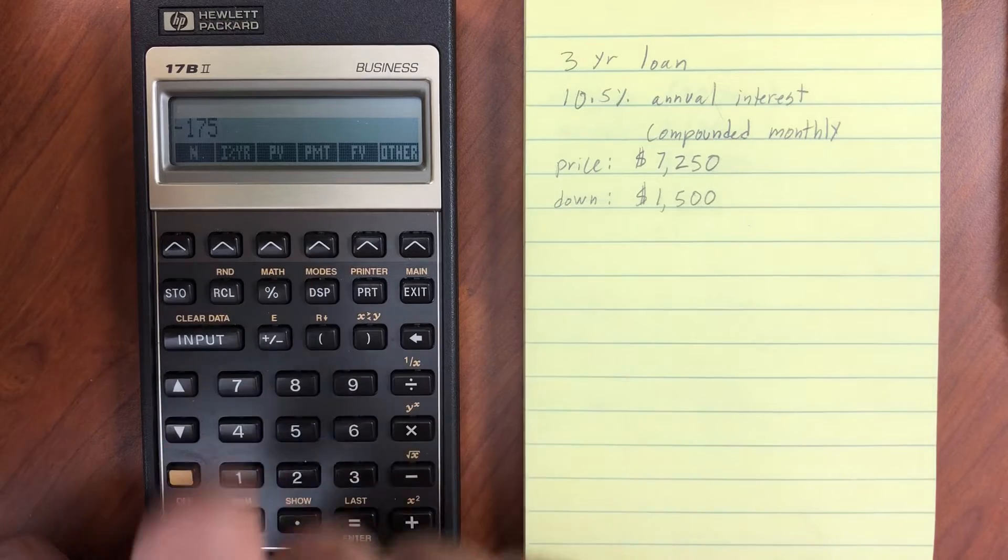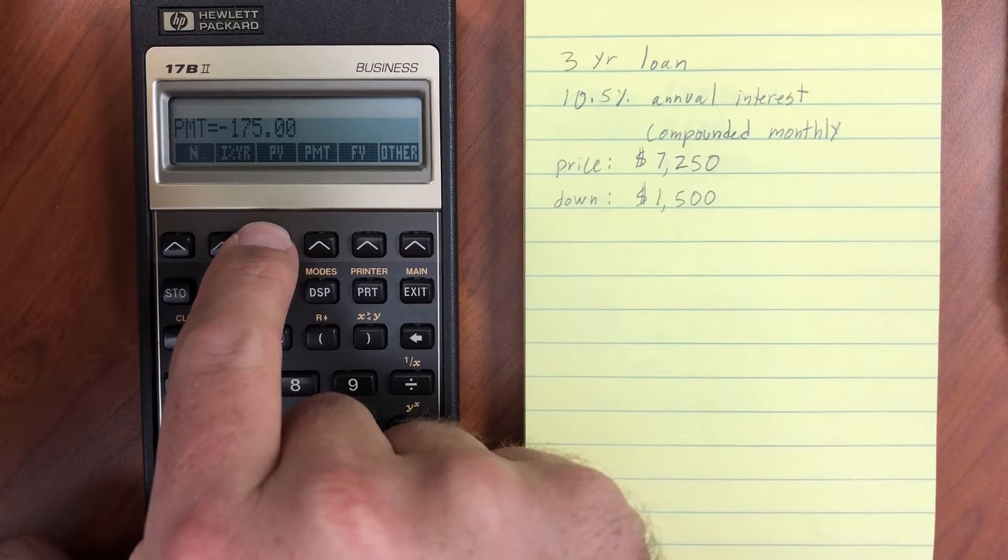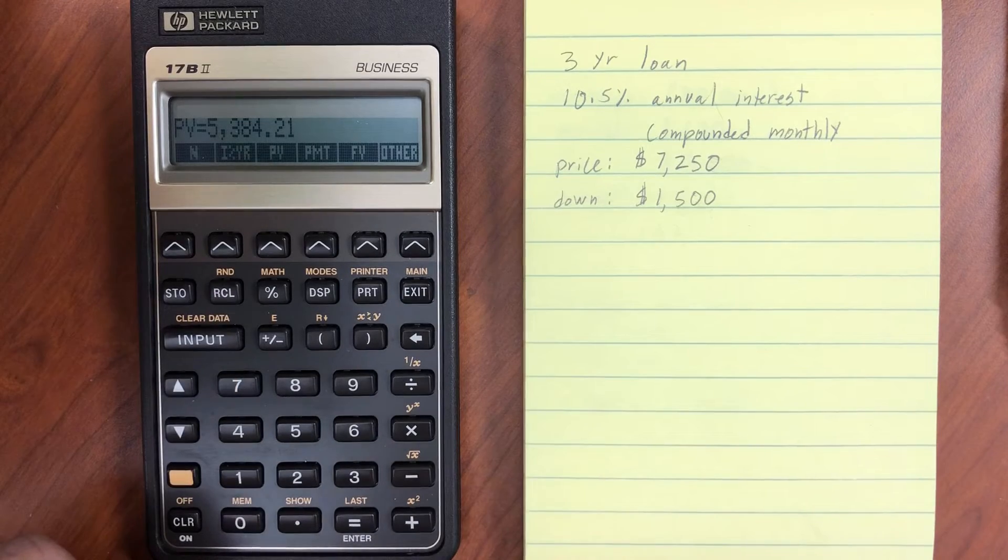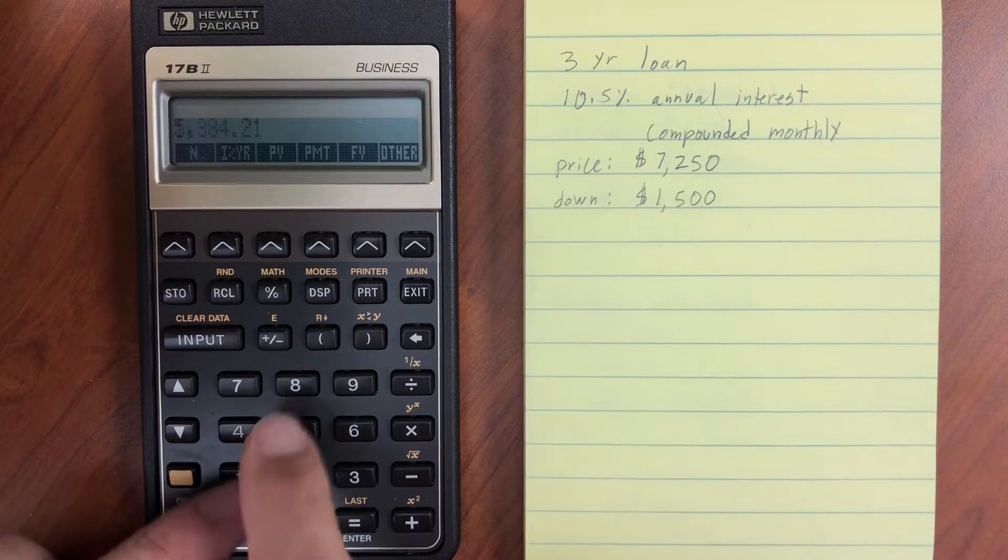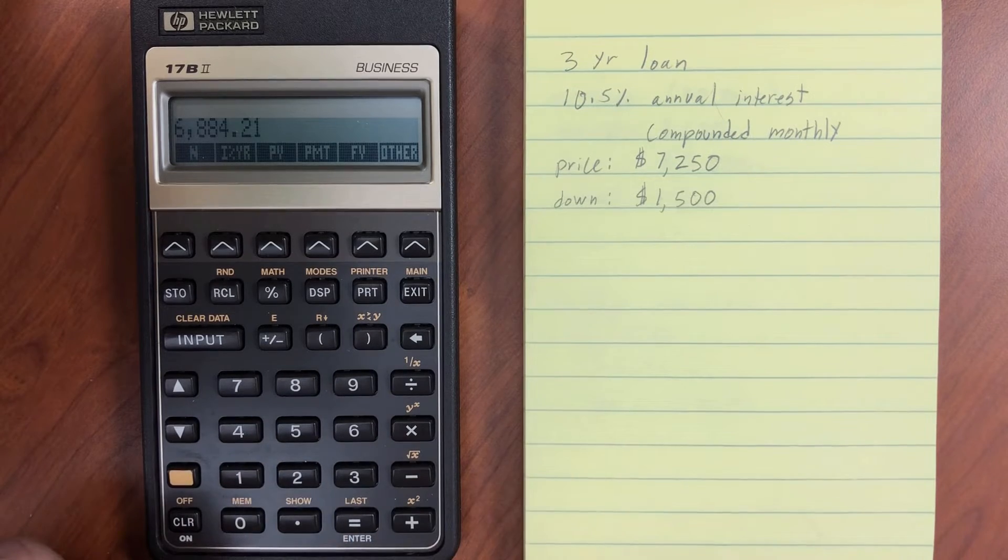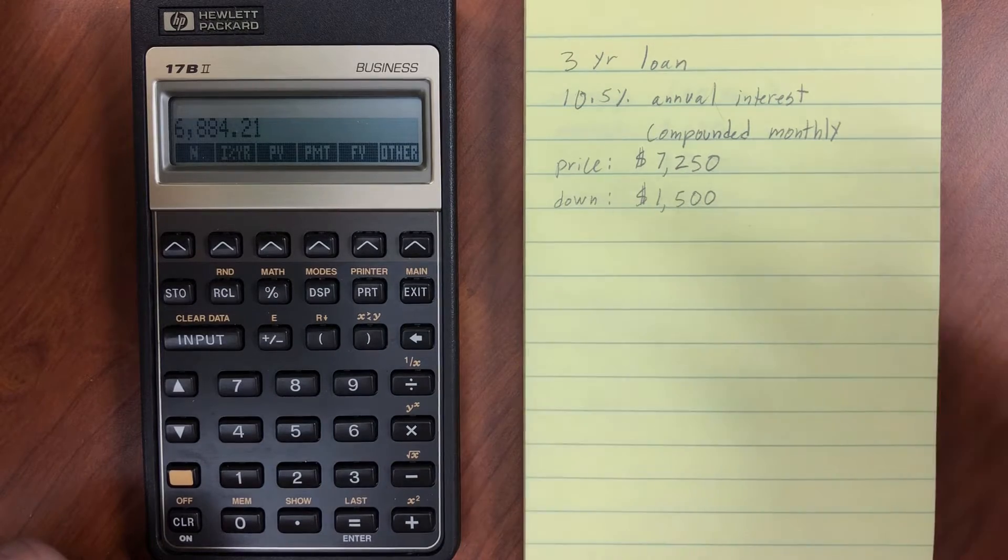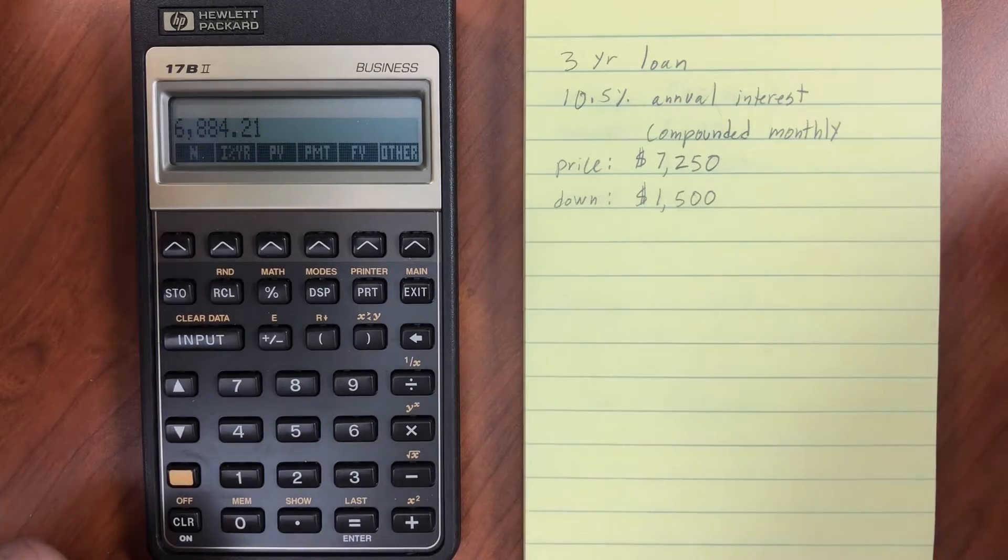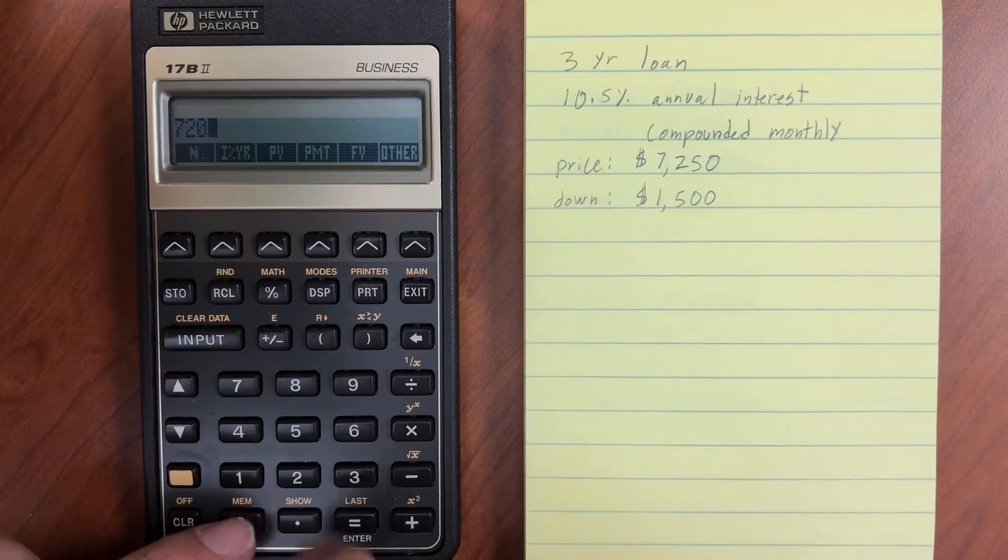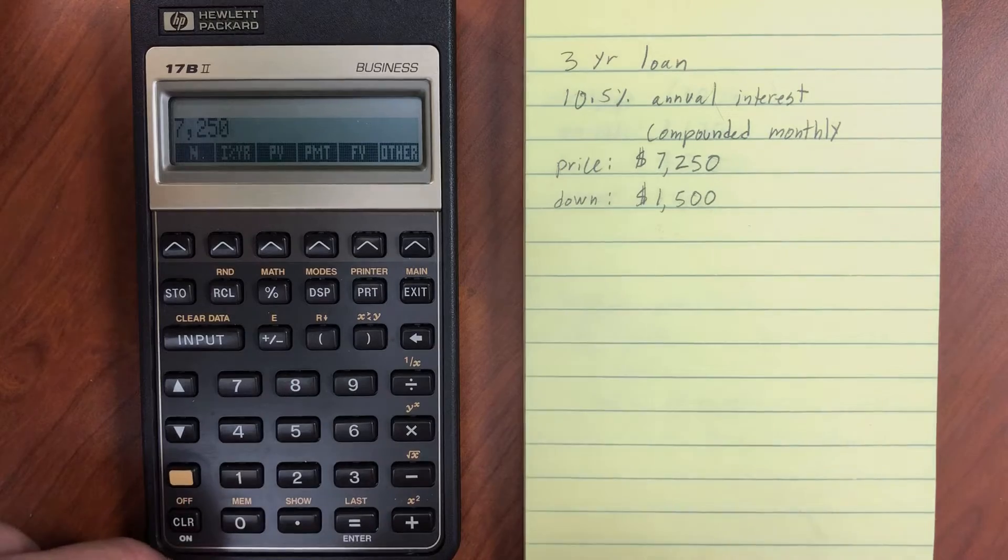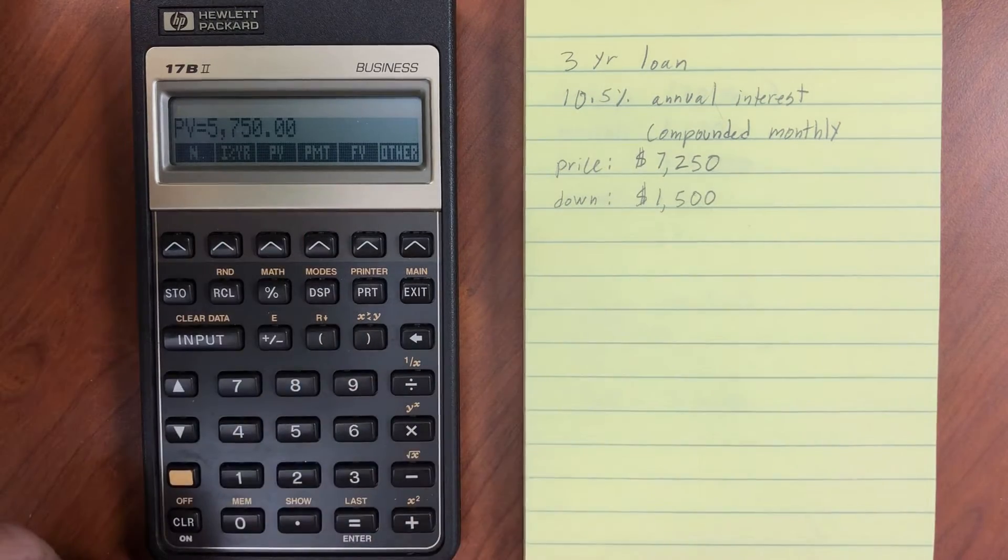And then go to present value. So that's how much we can afford, and then add in the $1,500 that we're willing to put down, and we get a total amount of $6,884.21. Or to go another way, let's say that we have that same $72.50 minus the $1,500 that we have as our present value.